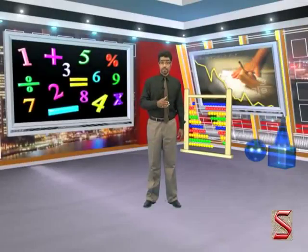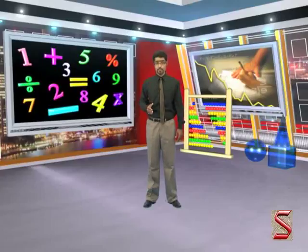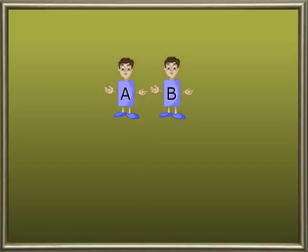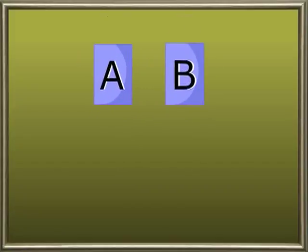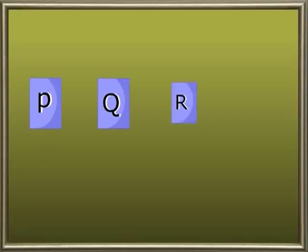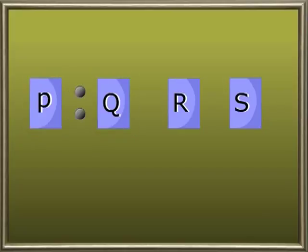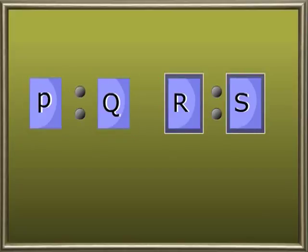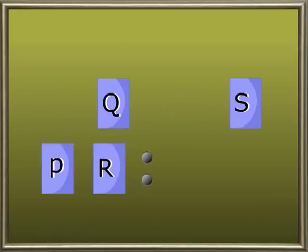Do you know what is an inverse ratio and a compound ratio? If A and B are two numbers, then the inverse ratio of A is to B is B is to A. And if P, Q, R, S are four numbers, then the compound ratio of P is to Q and R is to S is PR is to QS.